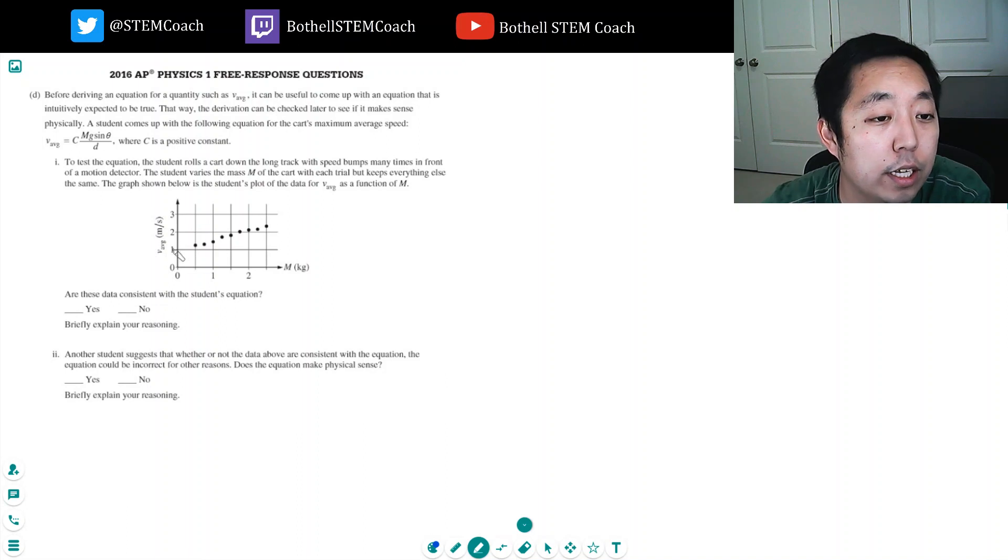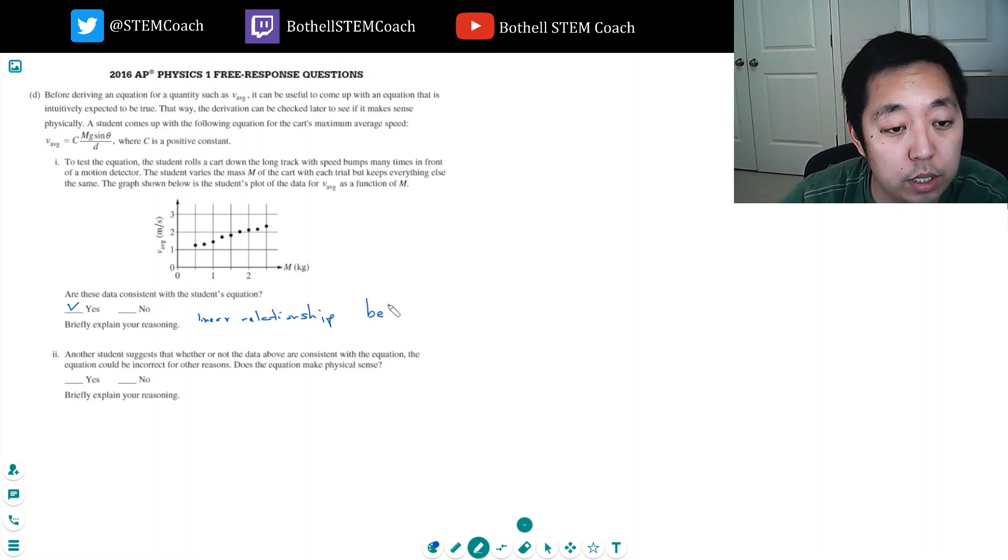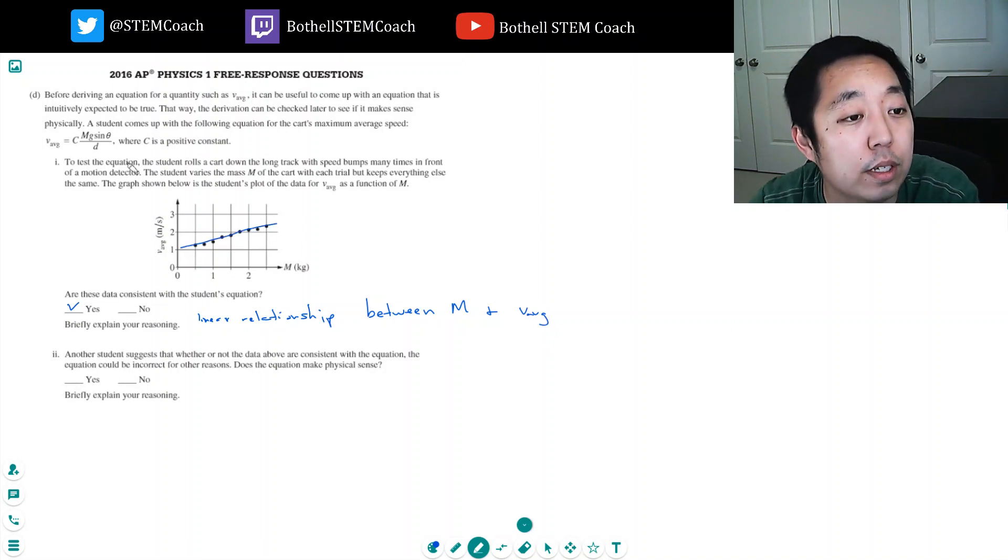The graph shown below is the student's plot of the data. So he's showing a linear relationship with mass. Yes, because his equation was a linear relationship between m and v average. I mean, I don't know, does it look like a line? It looks like a line to me. I can't think of a better trend it would be. So it's a line, it's a linear relationship.